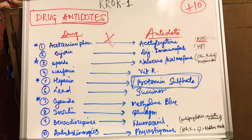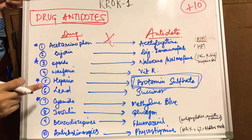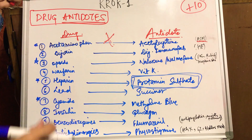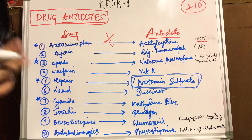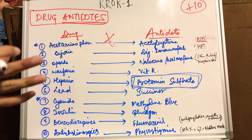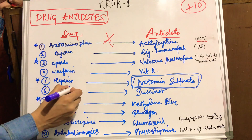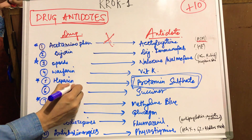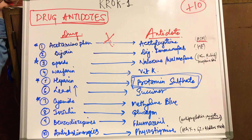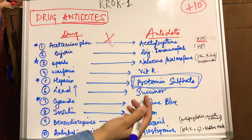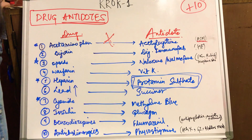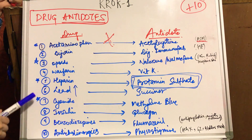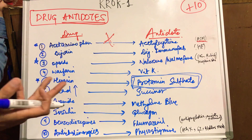The sixth drug is lead. For example, if a person is working in lead factories or anywhere where lead concentration is high, and there is a high amount of lead in the blood, we need to give something to decrease its effect. We give succimer.